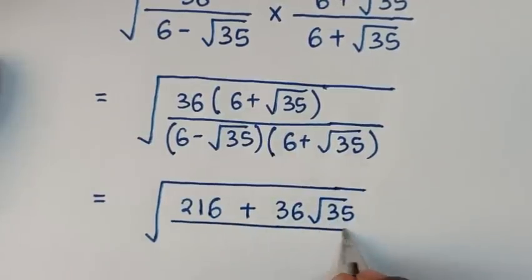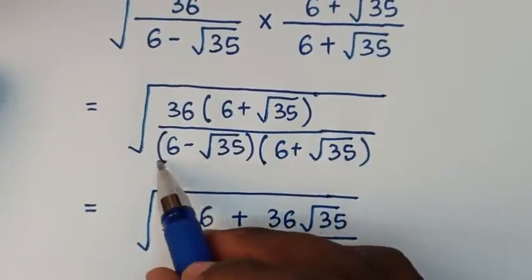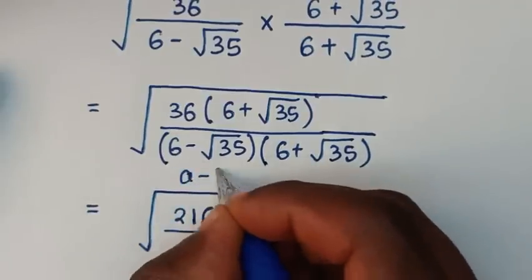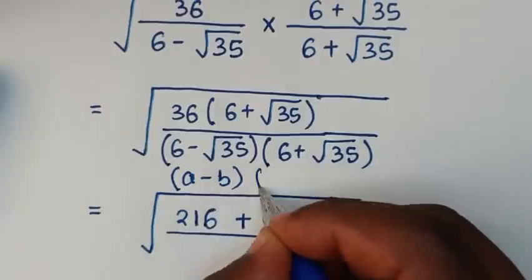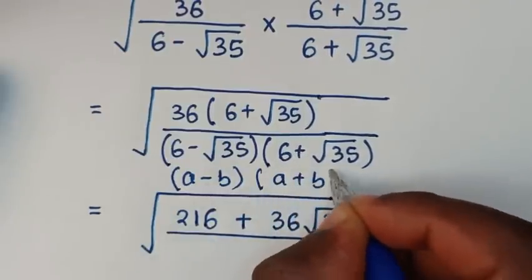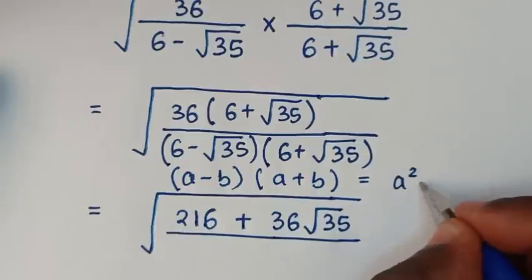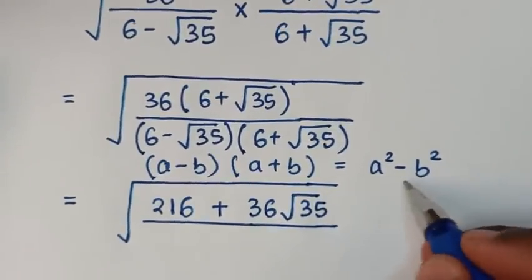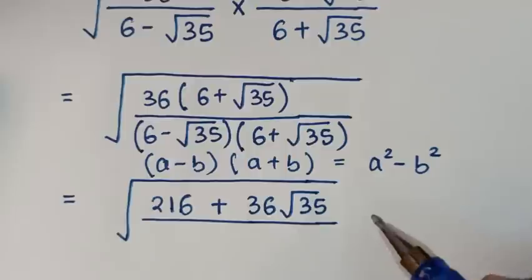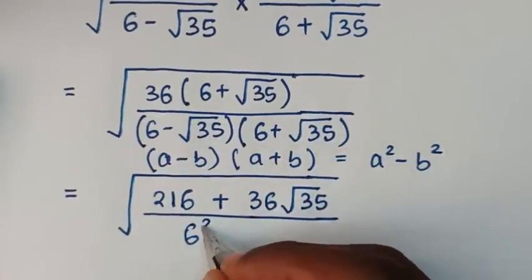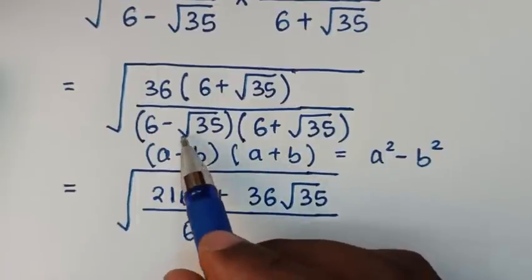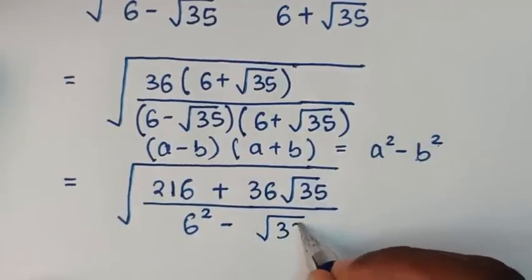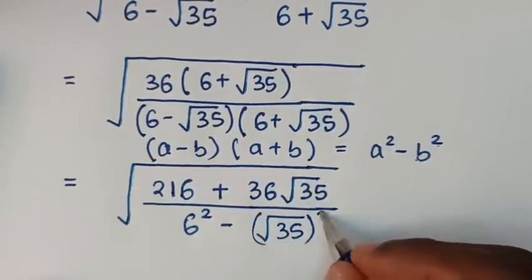Then over — from here, this times this is in the form of a minus b bracket times a plus b bracket, which is equal to a squared minus b squared. We will apply this form of difference of two squares. So it will be 6 squared minus square root of 35 bracket squared.